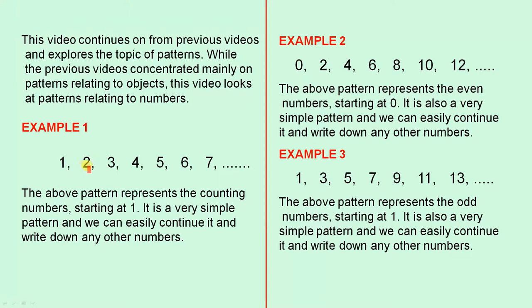So the first example we have 1, 2, 3, 4, 5, 6, 7. The above pattern represents the counting numbers starting at 1. It is a very simple pattern and we can easily continue it and write down any other numbers.